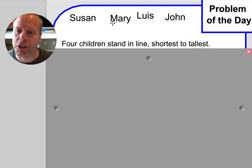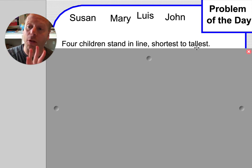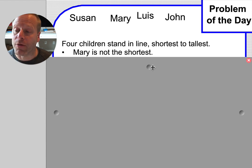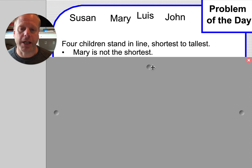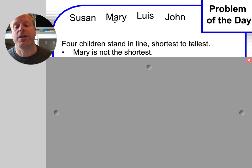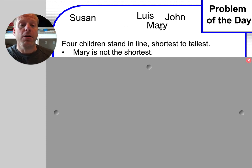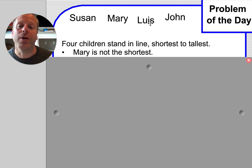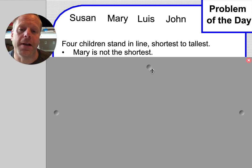Four children are standing in a line from the shortest all the way to the tallest. Mary is definitely not the shortest. So don't put Mary at the front — she could be second, third, or fourth, we don't know. But we do know it's definitely not Mary as the first person in the line.